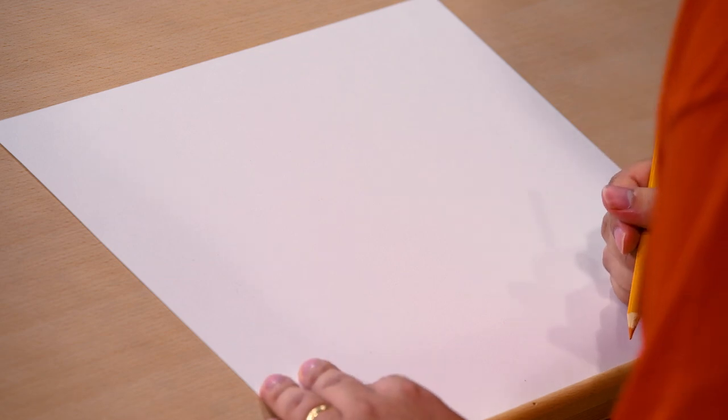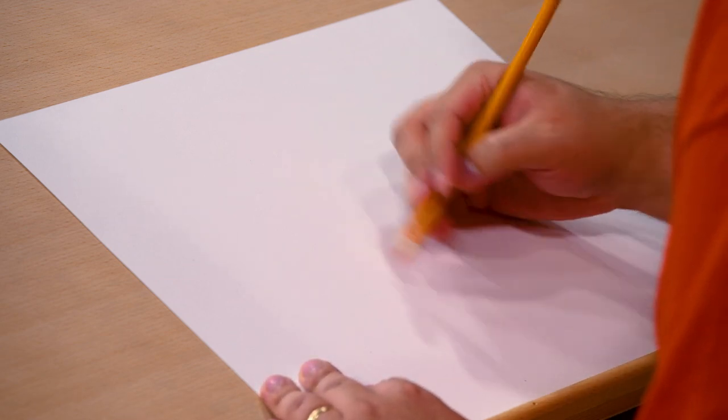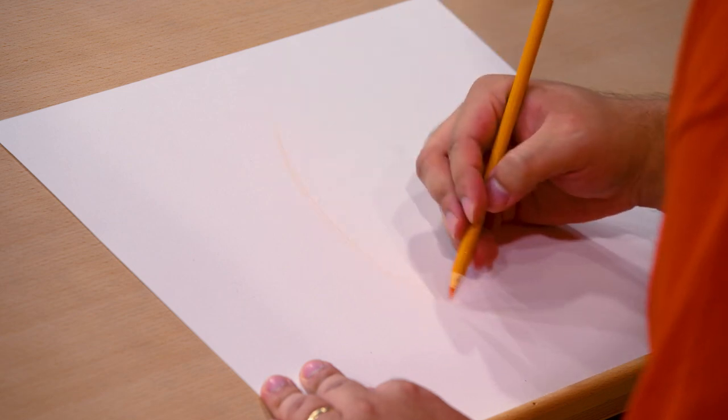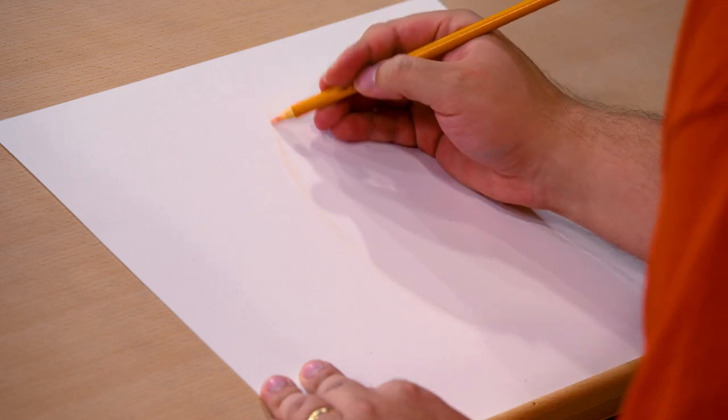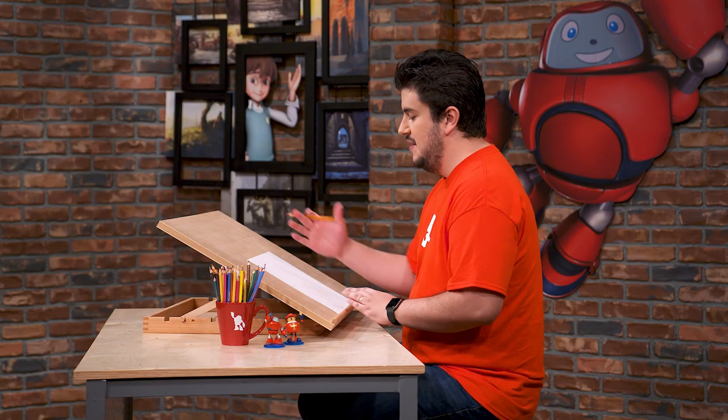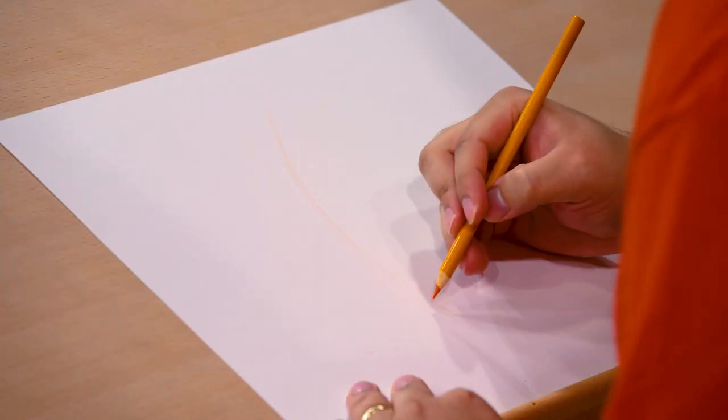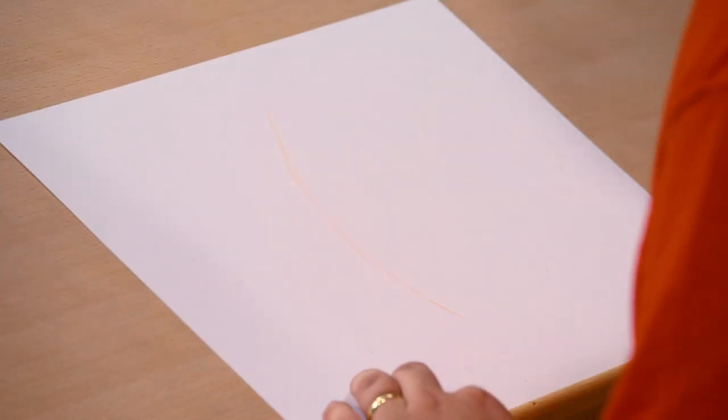All right, so the first thing I like to do when I'm drawing Gears is start off with what's called an action line. That's just a really light line to show the curve of how he's gonna be posed, because Gears is very curvy with all of his noodley arms and neck and whatnot.